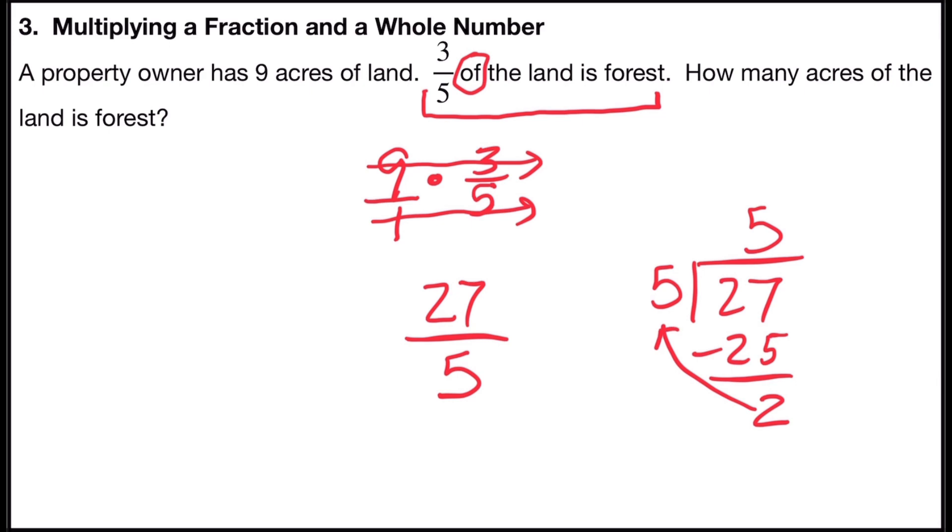And when I subtract, I have left over two out of five. And so in mixed number form, it would be five and two-fifths acres of the land that would be forest.